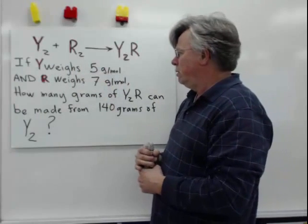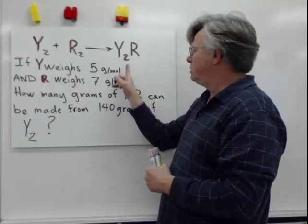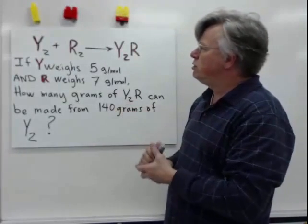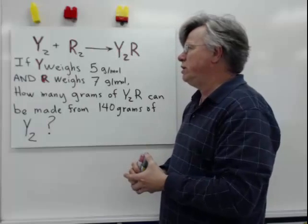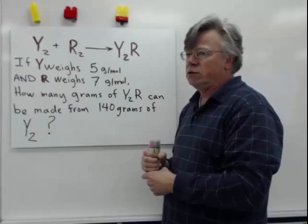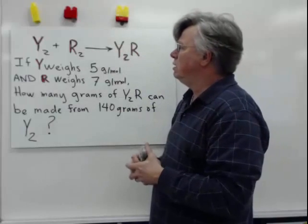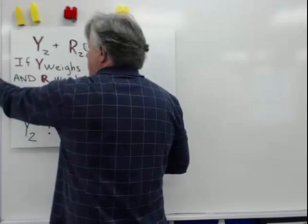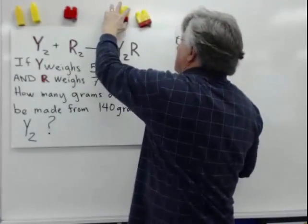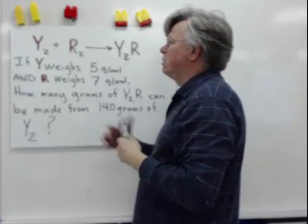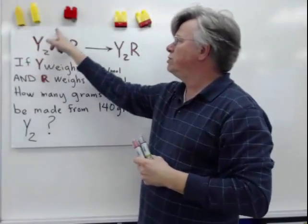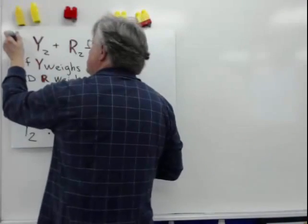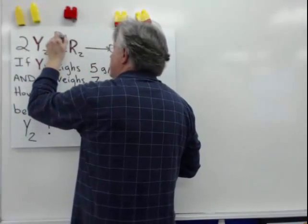The question is how many grams of product can you make from 140 grams. Now, this is not a balanced chemical equation yet — you cannot solve this problem without balancing it first. What we need to do is double the Y₂ and double the product, giving us the balanced chemical equation: 2Y₂ + 1R₂ → 2Y₂R. The ratio is two to one to two.